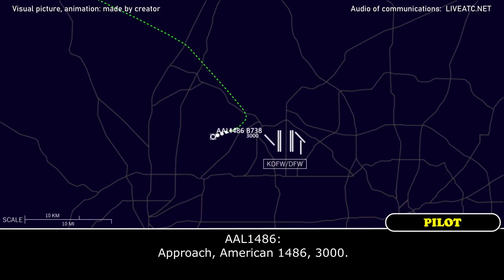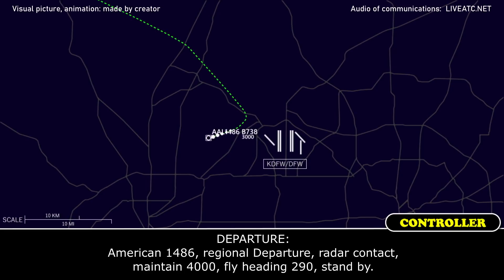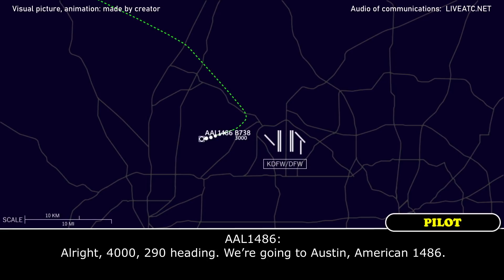All right, approach American 1486, 3,000. American 1486, regional departure, radar contact. Maintain 4,000, fly heading 290, stand by. All right, 4,000, heading 290. We're going to Austin, American 1486.